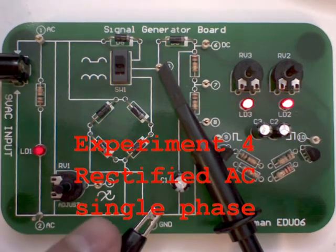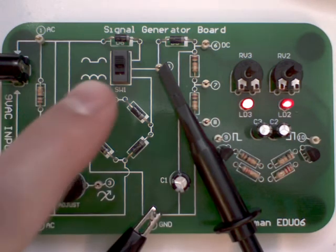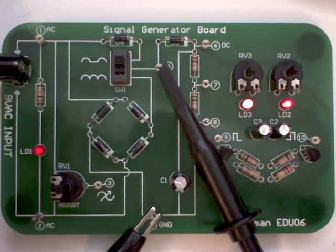Welcome to Experiment 4, Rectified AC Single Phase. Connect the probe as shown so the alligator clip goes to the ground and the tip goes to this test point.